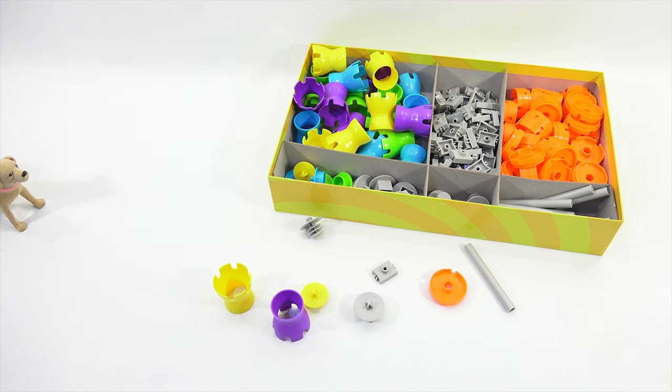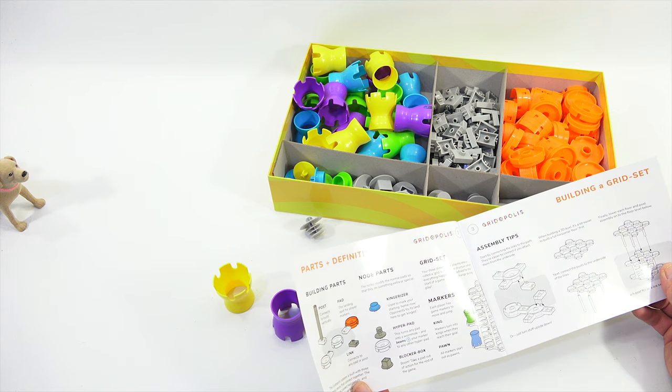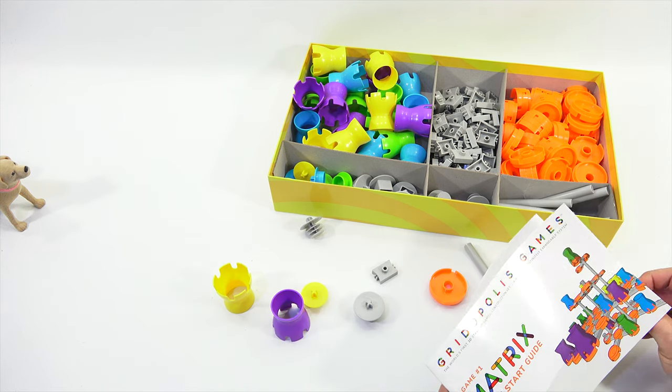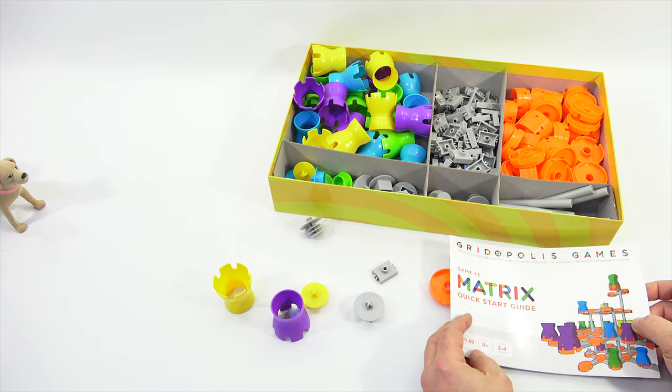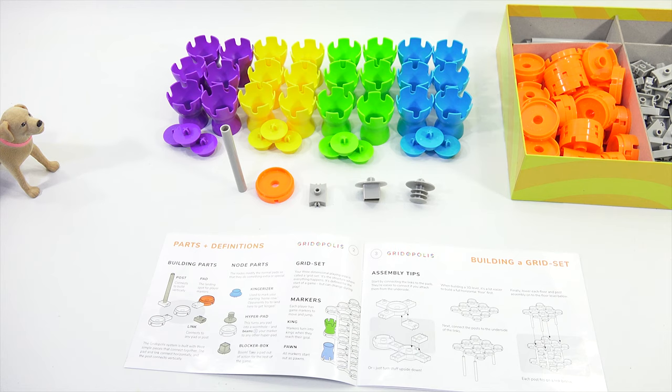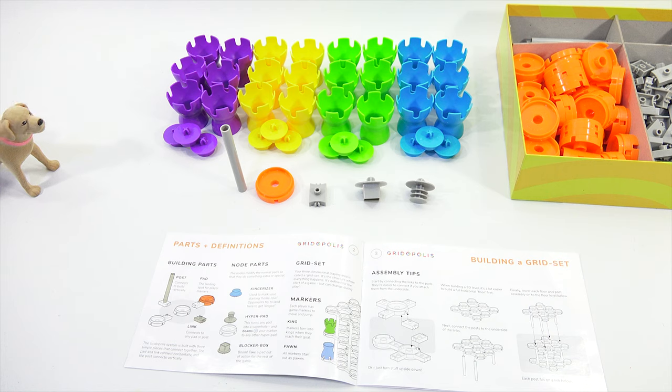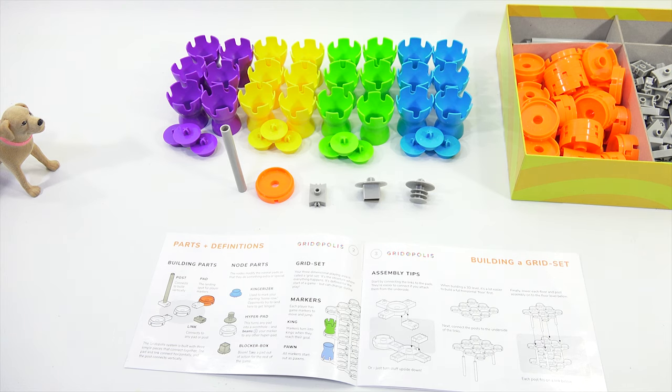I think I got them all. Mm-hmm. These are all the same. Okay. So this is what we're looking at here as the pieces. Okay. And then I need to now look at the rules. Okay. Not too much here. Building parts. Node parts. Grid set. Markers. Assembly tips. Let's read through this. We're going to come back now and then start a setup. And then we'll eventually do a gameplay. Yes. Or I might need to get some food for this, LPS Dave. I know. Talking about sausage links.